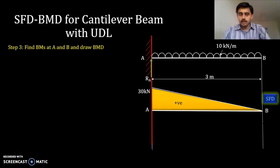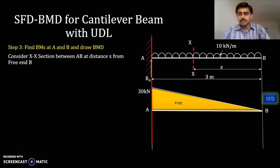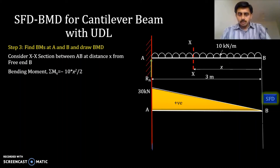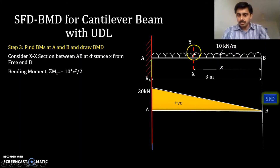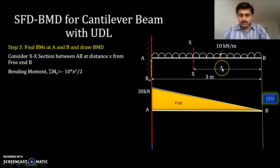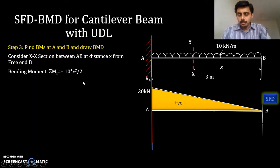Similarly, let us find the bending moment at B and A. Consider a section XX from the free end at distance X. By definition, bending moment is the summation of all moments due to forces towards the right of the section. The force is 10X acting at mid-span, so moment = −10X × (X/2) = −10X²/2. This is the bending moment at the section.